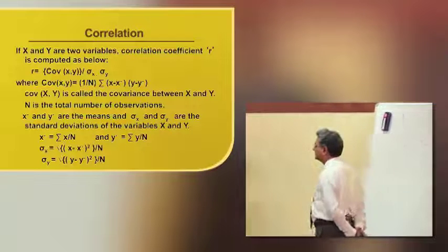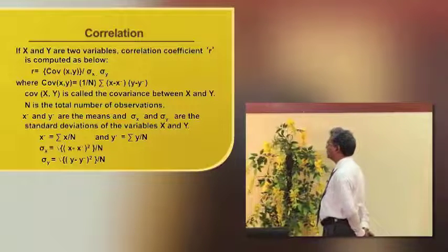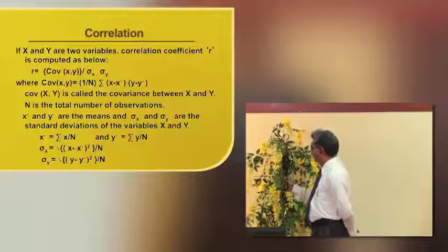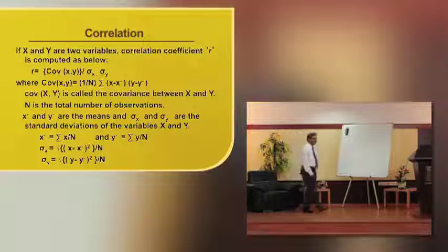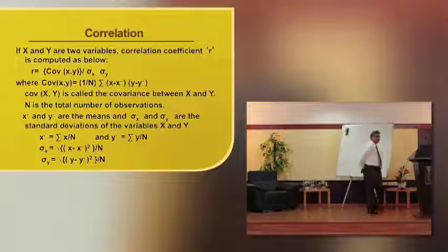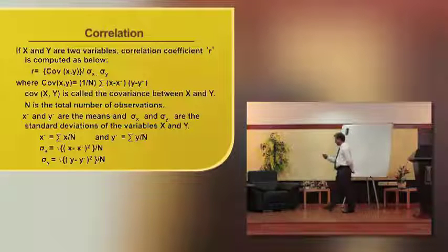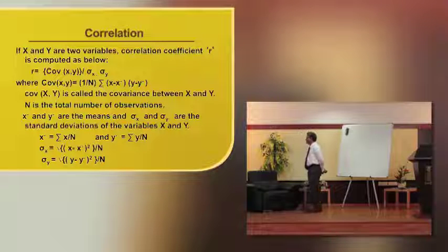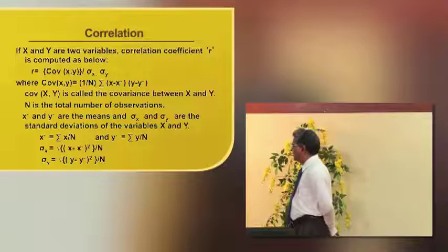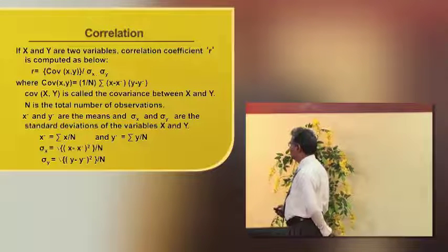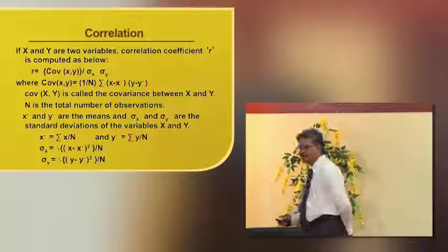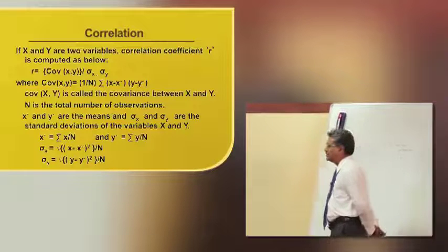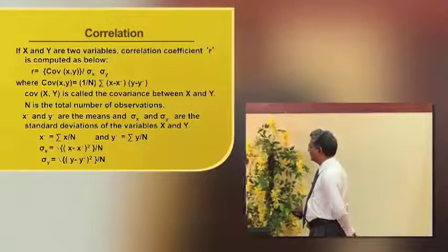Now we are entering the mathematics of covariance. If x and y are two variables, the correlation coefficient r is given by: covariance(x,y) divided by sigma-x times sigma-y. Here sigma always means standard deviation in statistics. Sigma-x is the standard deviation of variable x, and sigma-y is the standard deviation of variable y. Covariance(x,y) equals (1/n) × Σ(x − x̄)(y − ȳ). Let us take a small example — everything will become clear.